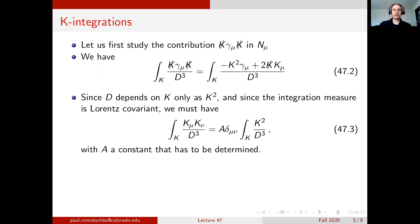Since the denominator only depends on k through k squared, and since the integration measure is Lorentz covariant, we must have that the integration of k_mu k_nu is proportional to a Kronecker delta with some coefficient A times the Euclidean integral of k squared over D cubed. We can determine this constant A by contracting both sides with the Kronecker delta, so that we get the Euclidean integral is 4 times A times the same Euclidean integral, and the 4 is coming from the trace of the Kronecker delta in four dimensions. So we find that A has to be a quarter.